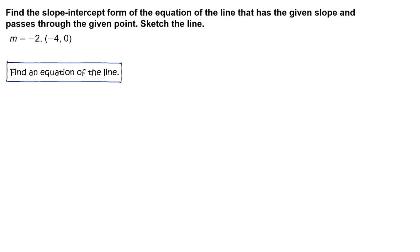First, find an equation of the line. Begin with the point-slope form of the line: y minus y sub 1 equals m times the quantity x minus x sub 1. Next, substitute negative 2 for m, negative 4 for x sub 1, and 0 for y sub 1.